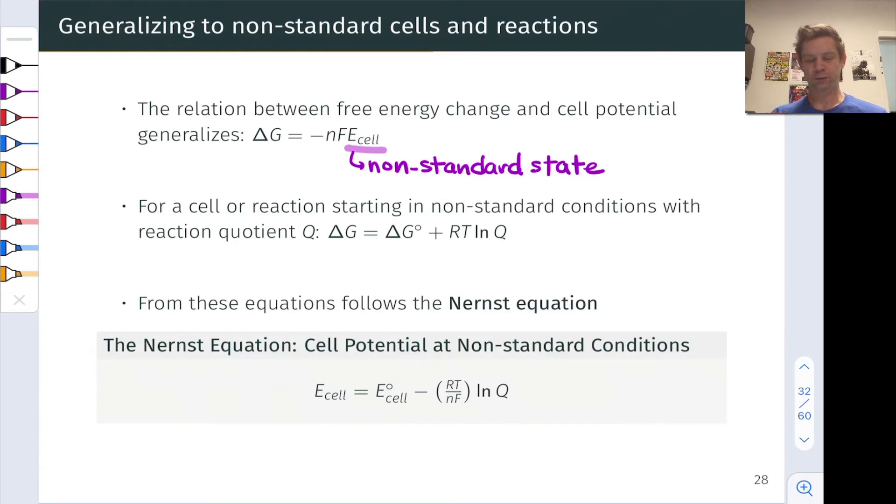And now what we can do is replace these delta G terms with our negative N F E cell terms that we've developed previously to think about what happens in an electrochemical or galvanic cell situation. So doing that substitution we get negative N F E cell under non-standard conditions is negative N F E naught for a standard galvanic cell plus RT natural log of Q.